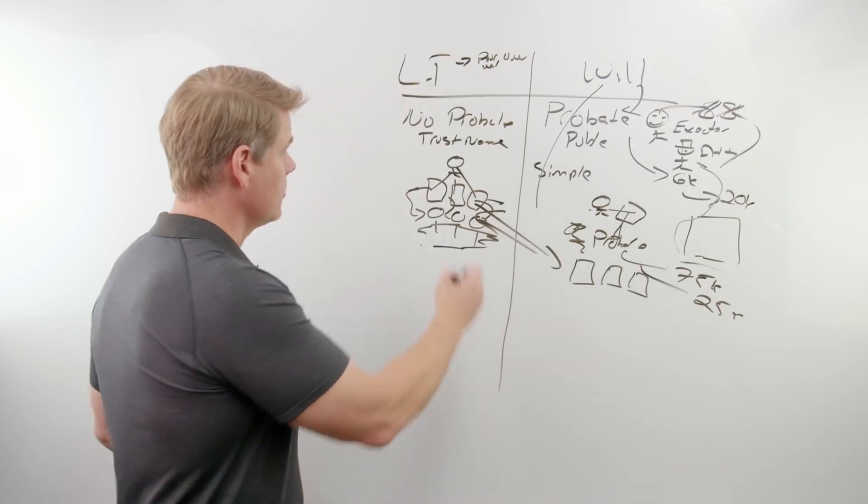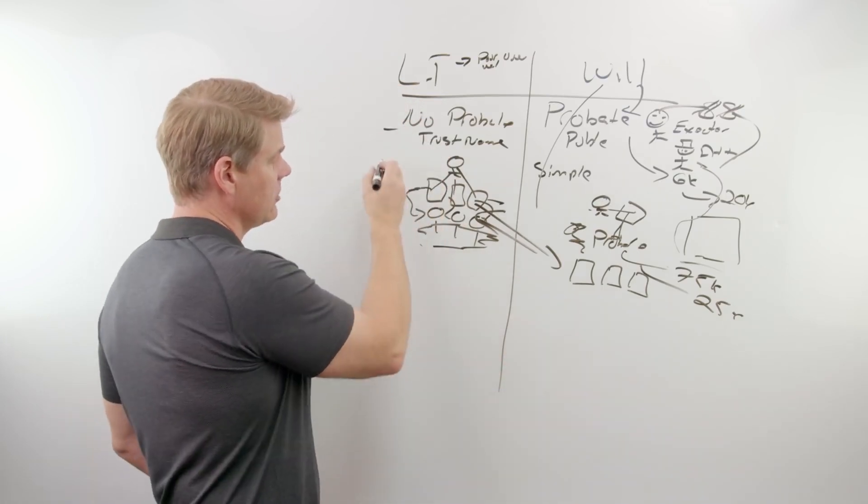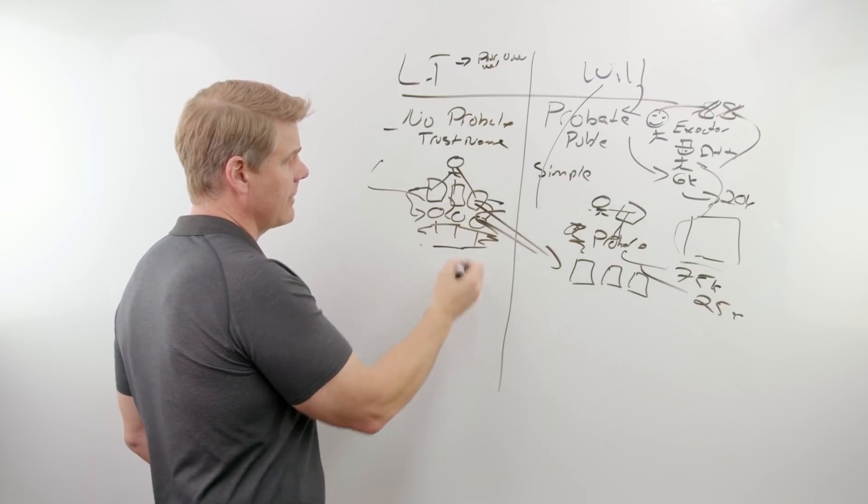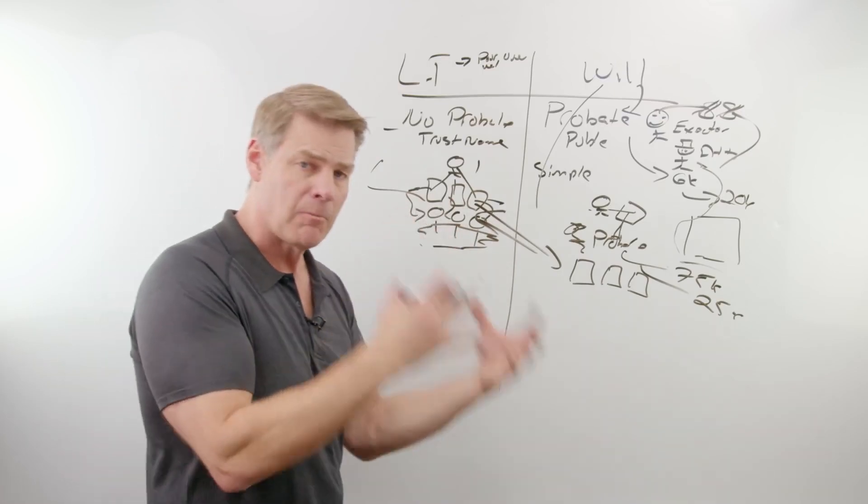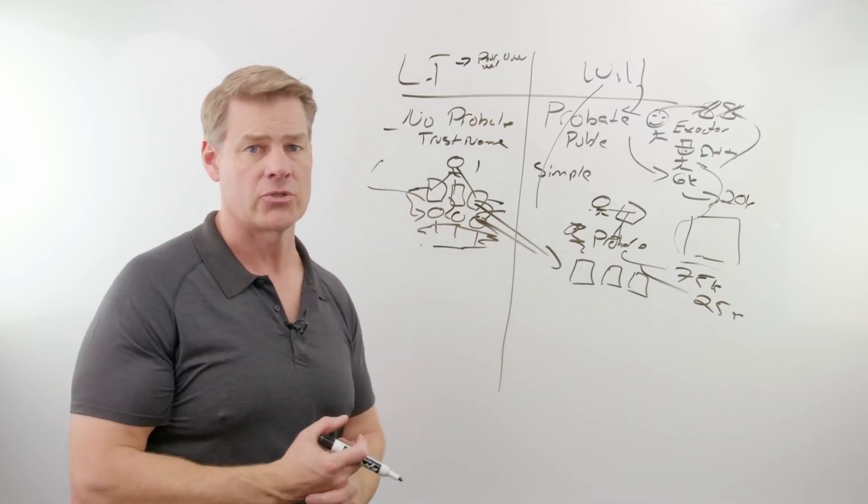Wouldn't it be simpler to do it this way? Start with your living trust, fund your living trust, and then you can create the sub-trusts out of this one trust. And you're not going to get billed multiple times because all this is baked in to the initial structure.